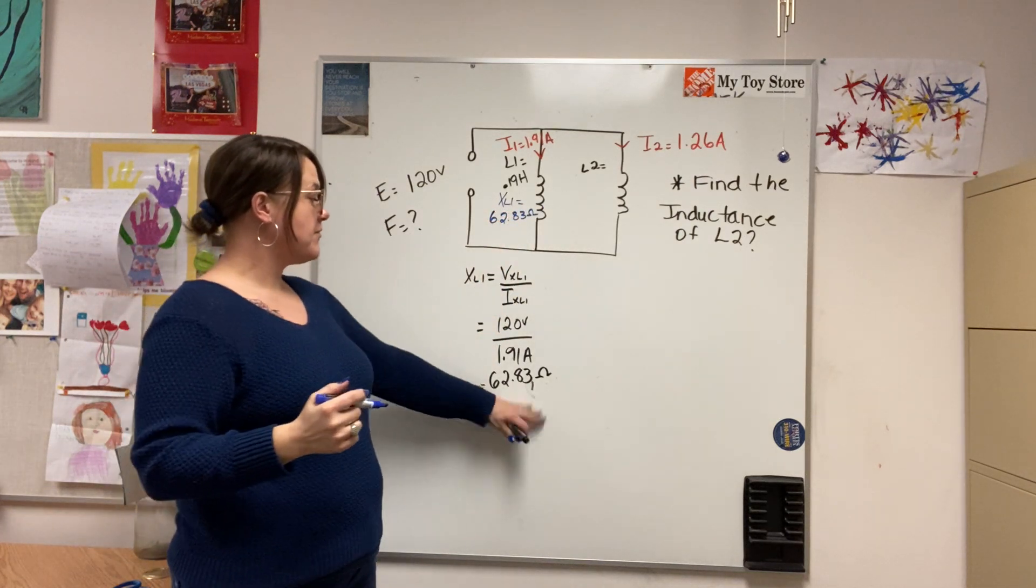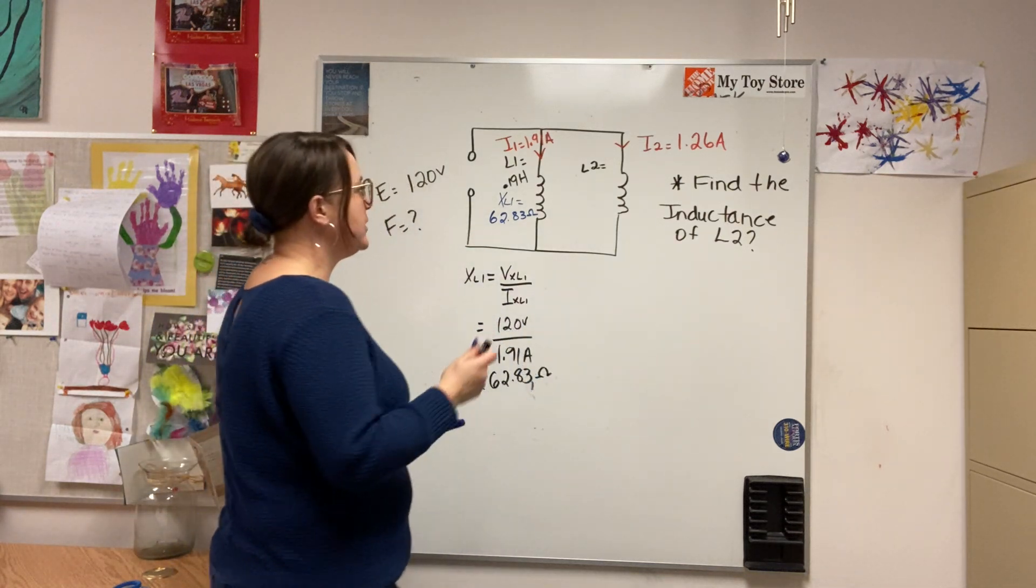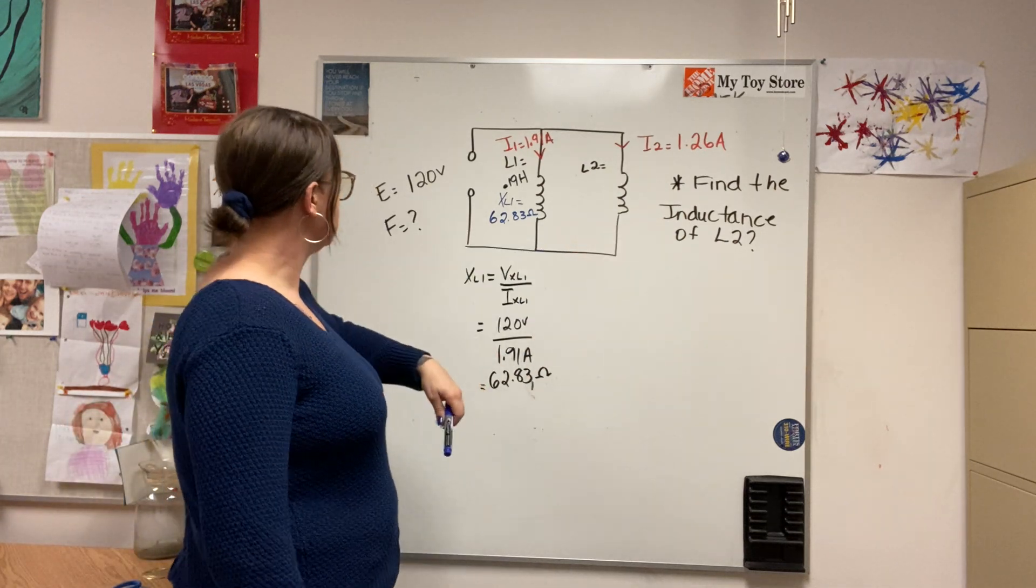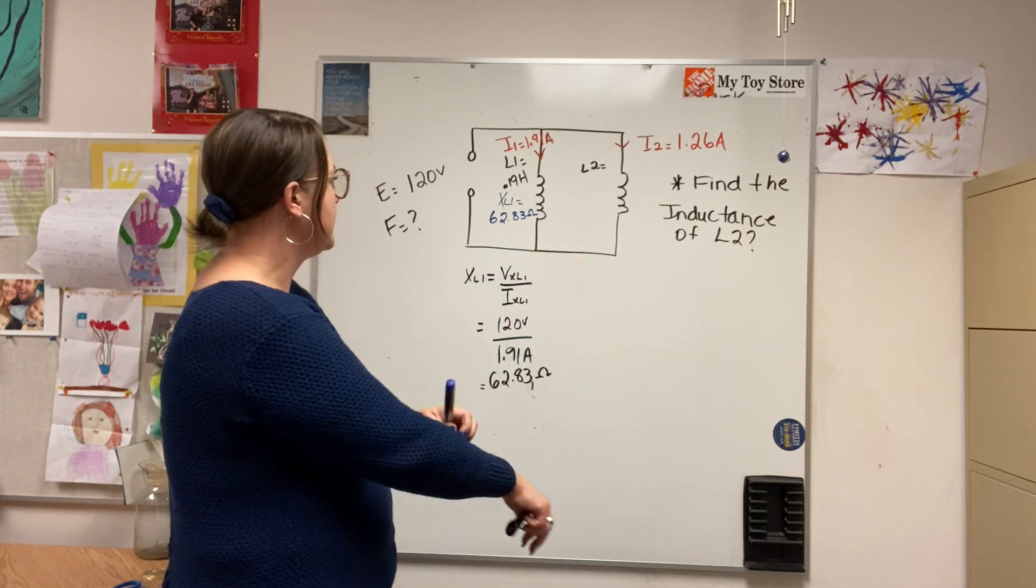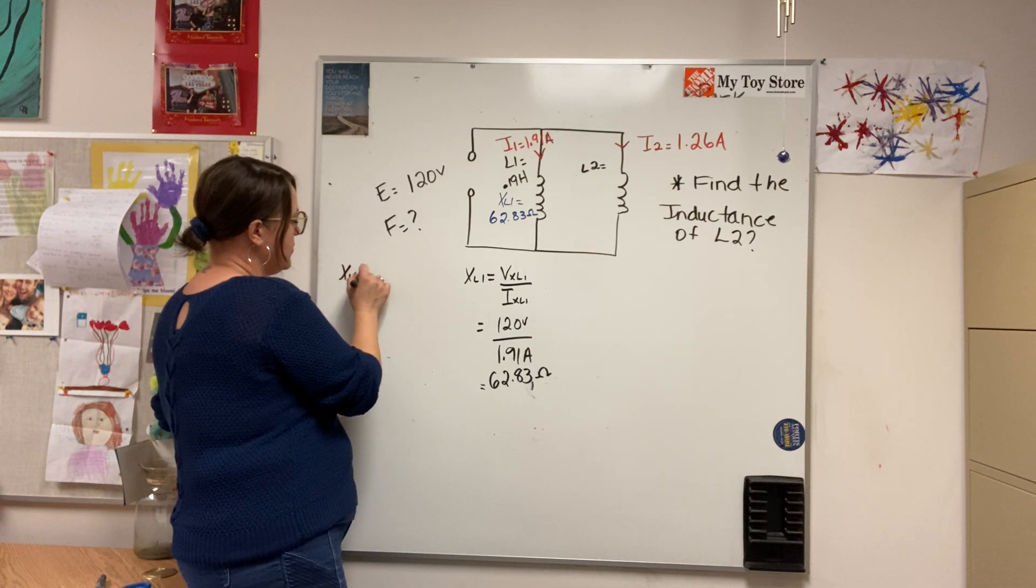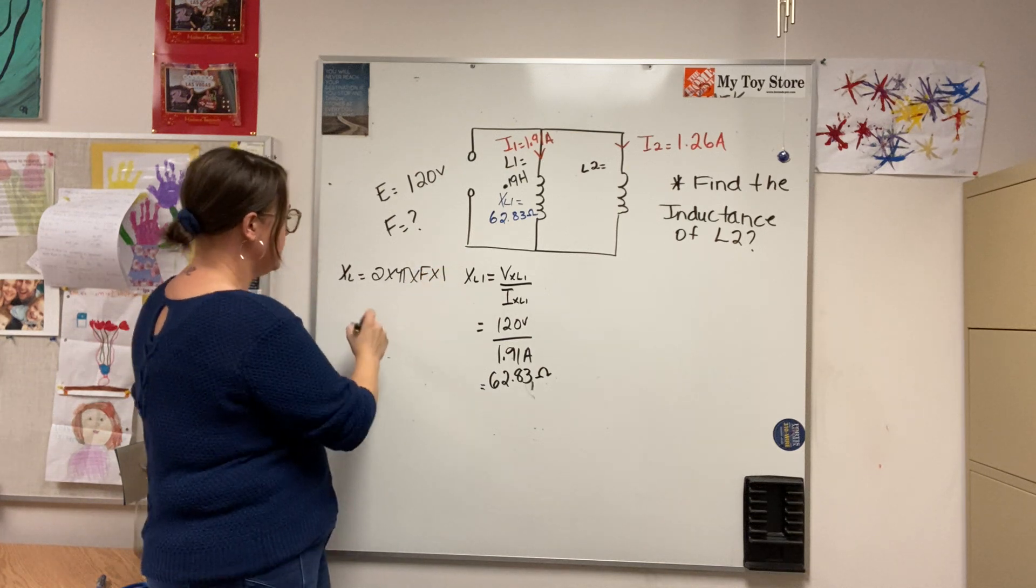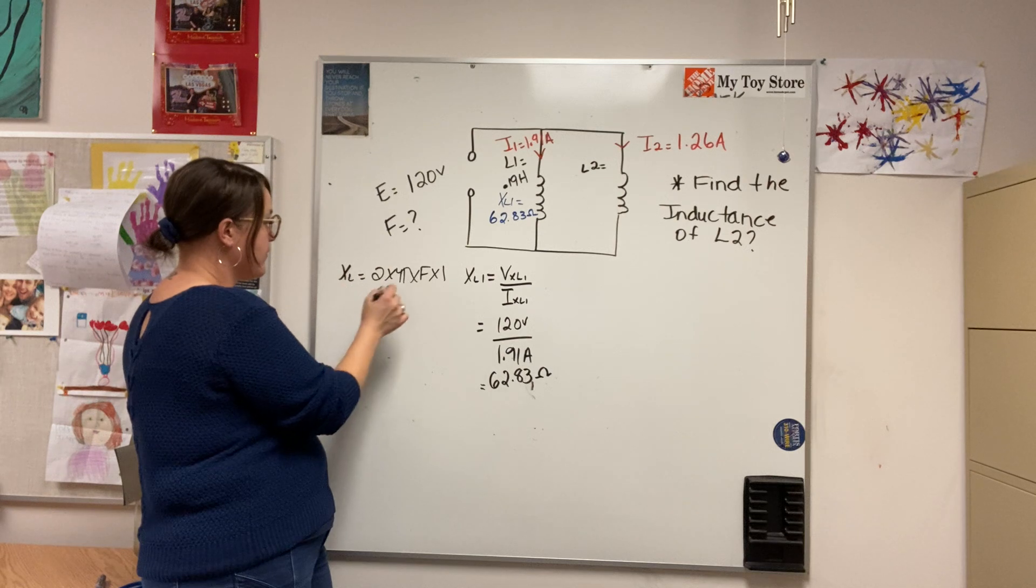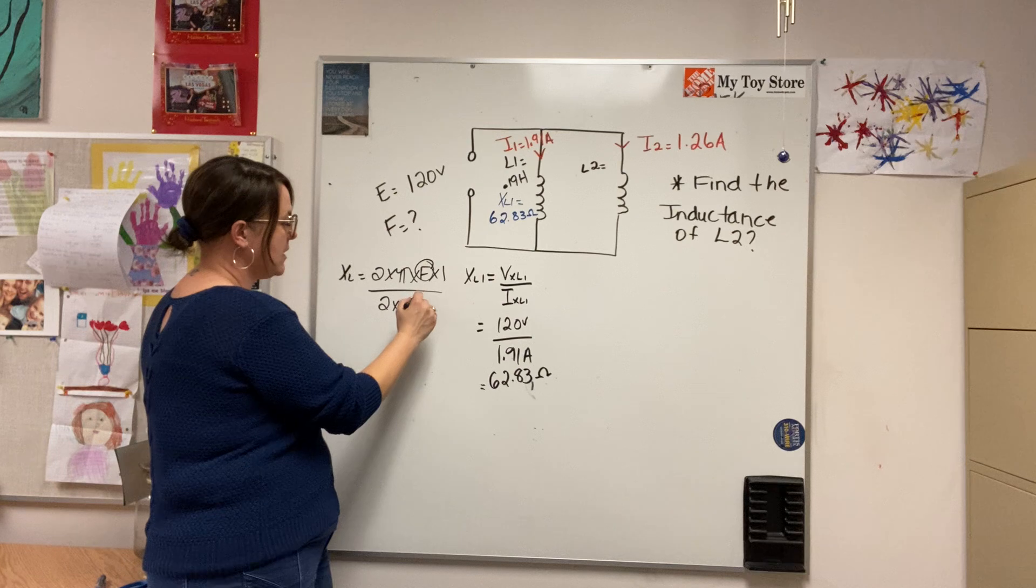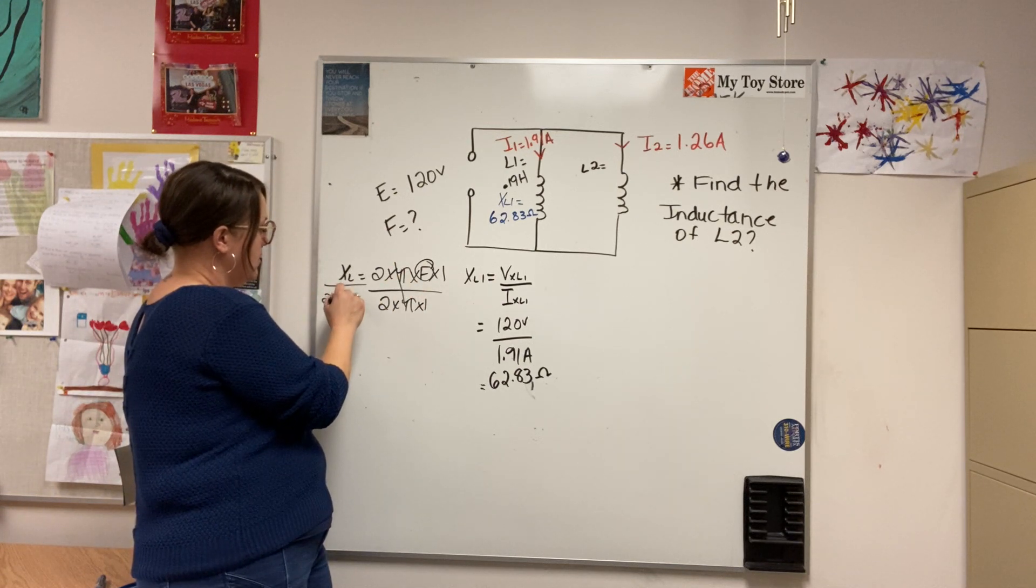So now I can find the frequency because I have the XL. So let's do that, and then I can apply that to find the L over here. So XL equals 2 times pi times frequency times inductance. So I'm looking for frequency, so I would divide by 2 times pi times L. What I do on one side, I do on the other.